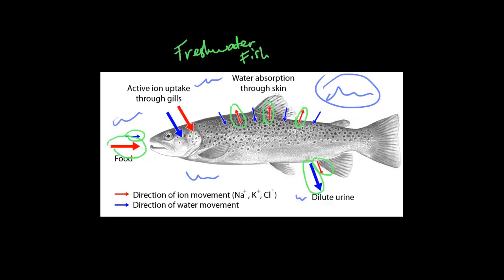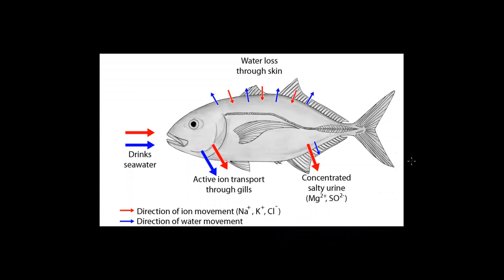Now moving on, we have the saltwater fish. Once again, red is the direction of ion movement — salts such as Na (sodium), K (potassium), and Cl (chloride) — and blue arrows show the direction of water movement. As you can see, this fish actually drinks seawater, which contains both ions and water.